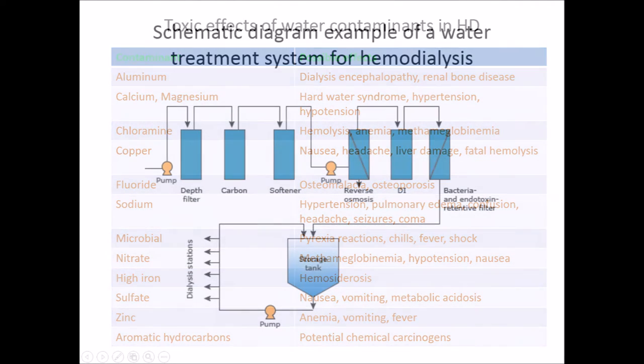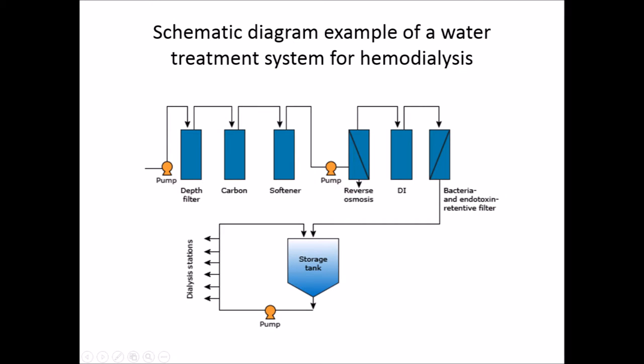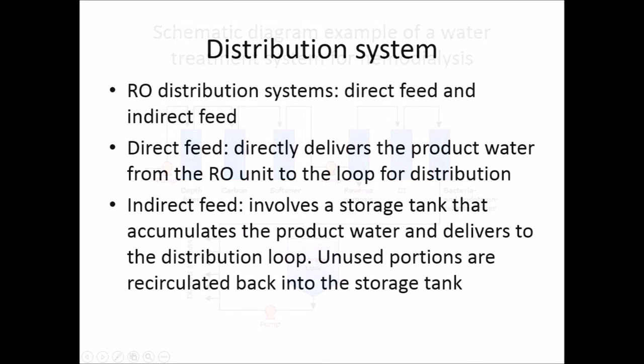This is a schematic diagram of a water treatment system for hemodialysis. Once the water has been purified by the RO system, the RO distribution system can either be a direct feed system or an indirect feed system. The direct feed system delivers product water from the RO unit directly to the loop for distribution. An indirect feed involves a storage tank in between, which accumulates product water delivered to the distribution loop, with the unused portion recirculated back into the storage tank.